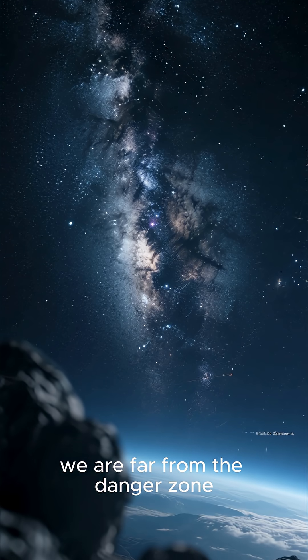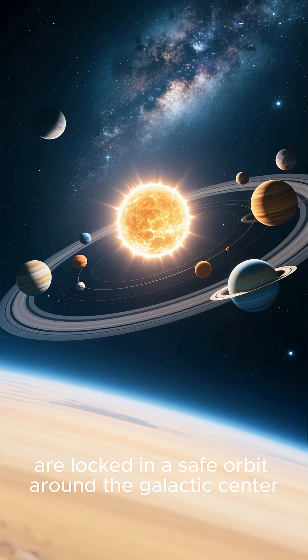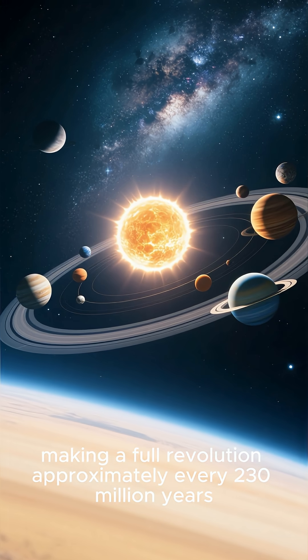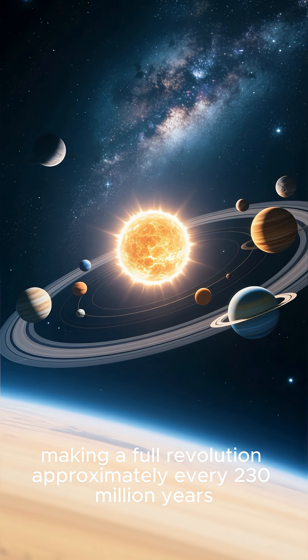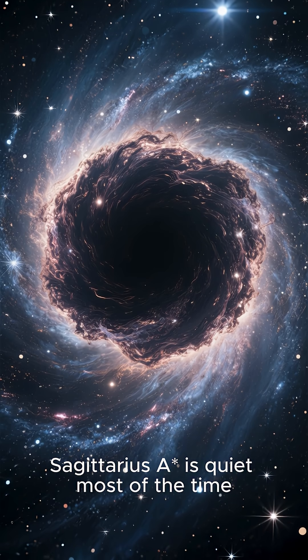Our sun and the entire solar system are locked in a safe orbit around the galactic center, making a full revolution approximately every 230 million years. Sagittarius A* is quiet most of the time, not actively consuming matter.